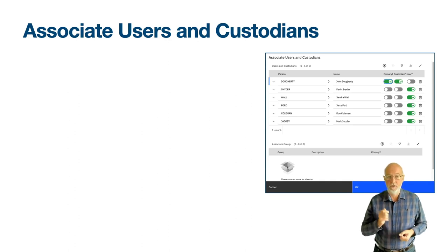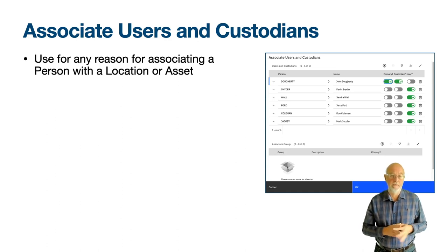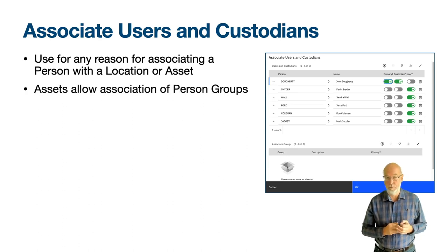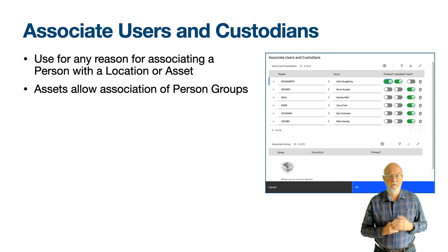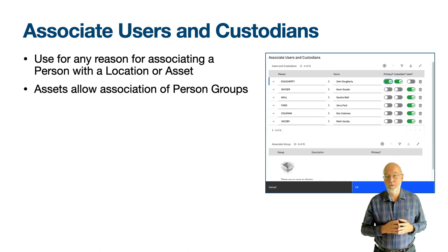Simply, the action is used for any reason for linking a person group. For whatever reasons you decide to use this feature, do consider the maintenance of the data. Clients typically have thousands of locations and assets, so you need to consider how you go about not only creating the associations but maintaining them afterwards, and whether values will be derived from making those associations.